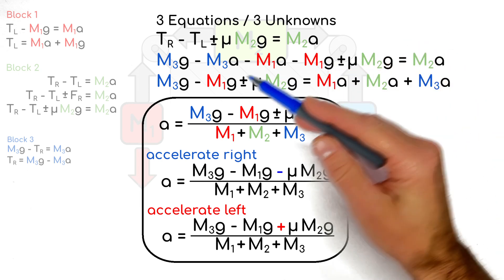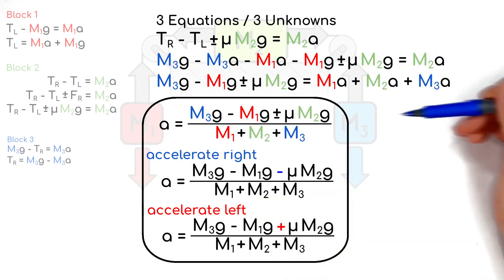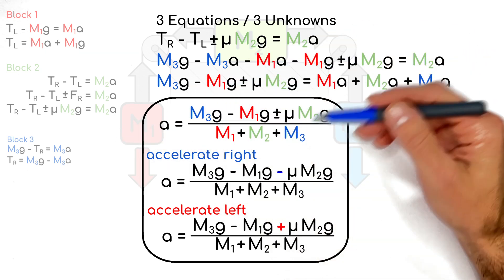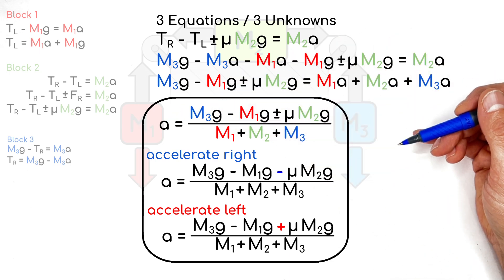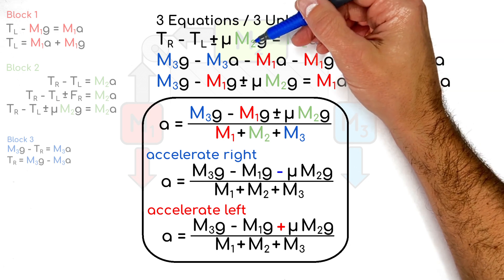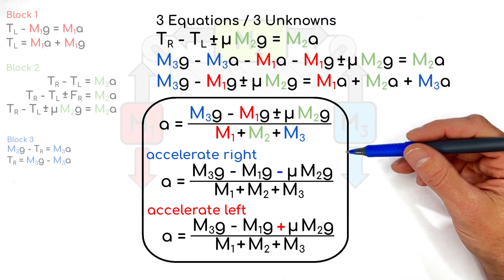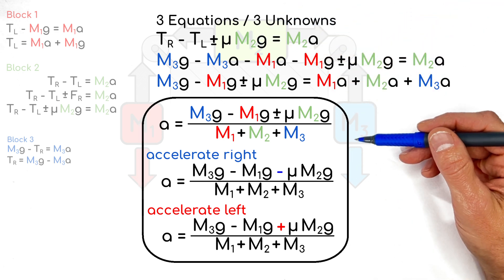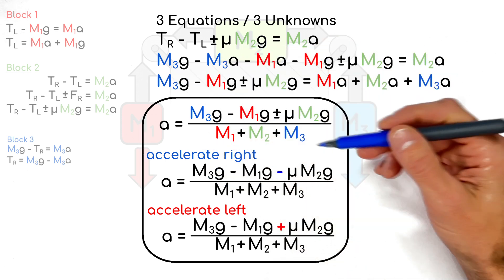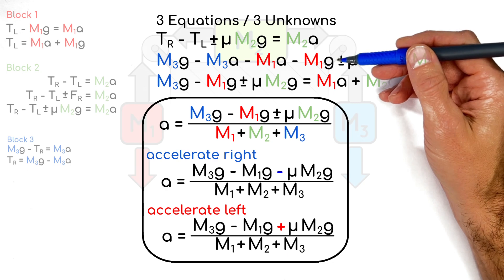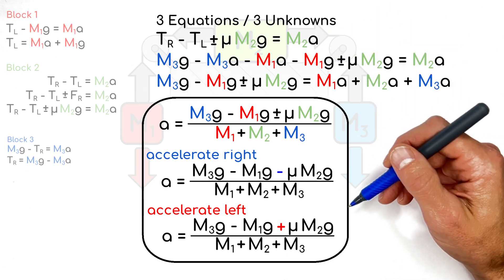Now, remember, the direction of this friction force is dependent on which side is heavier. Now, if we're at this point in the problem, we should have already determined, based on which block was heavier, which way this system is going to go. So if this top block is going to accelerate to the right, then we're going to say this friction is in the negative direction, because it's opposing that motion. And if the top block is going to accelerate to the left, then friction is going to be in the positive direction, since it's opposing that motion.